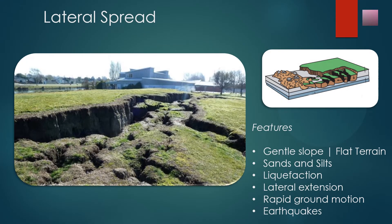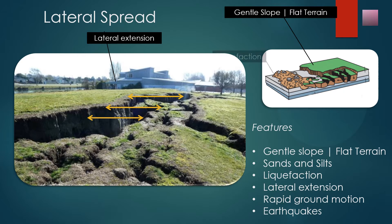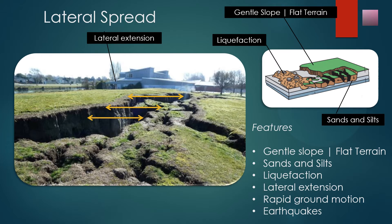Lateral spreads are distinctive because they usually occur on very gentle slopes or flat terrain. The dominant mode of movement is lateral extension, accompanied by shear or tensile fractures. The failure is caused by liquefaction, the process whereby saturated, loose, cohesionless sediments are transformed from a solid into a liquefied state. Most usually these are sands and silts. The failure is usually triggered by rapid ground motion, such as that experienced during an earthquake, but can also be artificially induced.